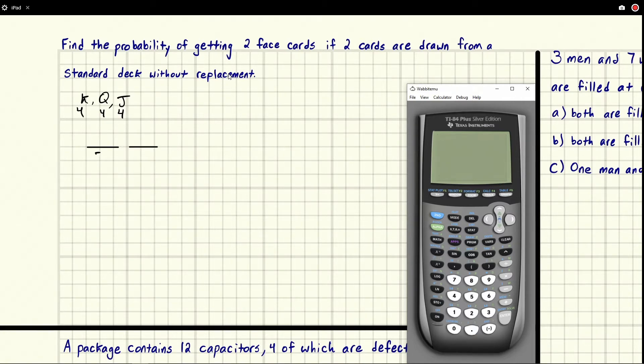then we only have 51 to pick from. If we pick a face card, there's 12 face cards to pick from, and then we lose a face card, so it goes down to 11.